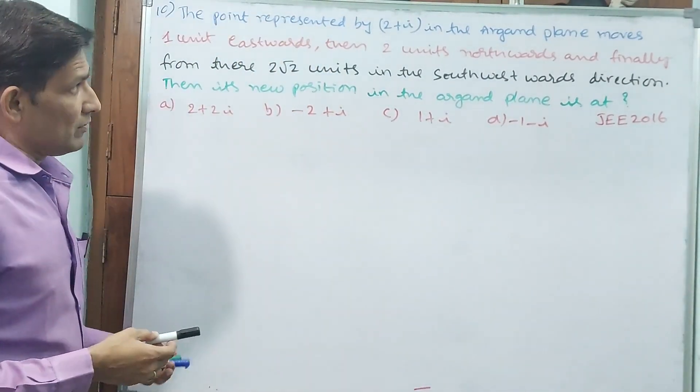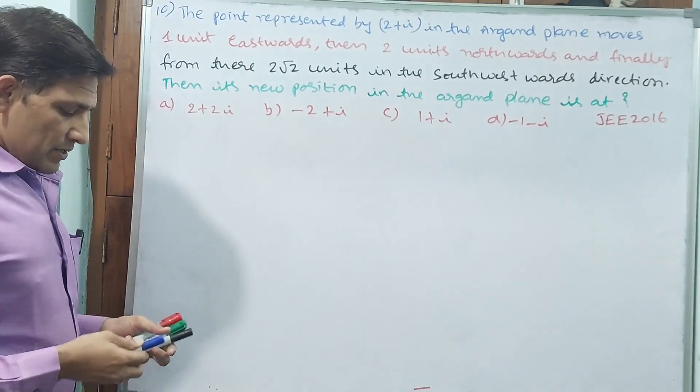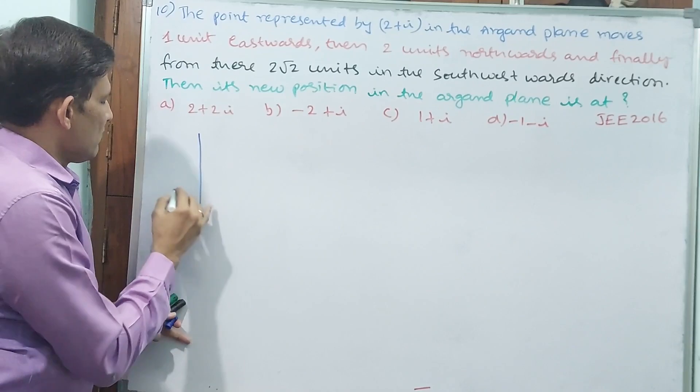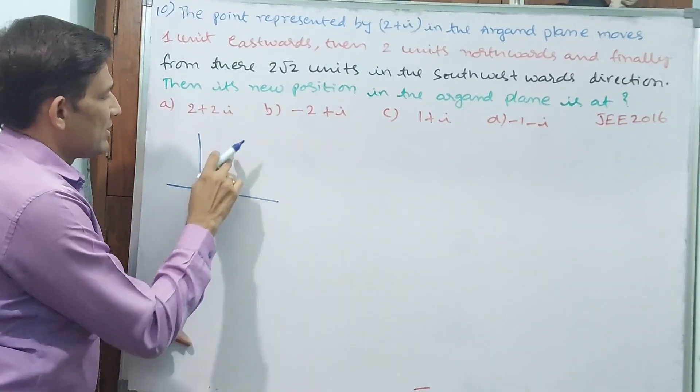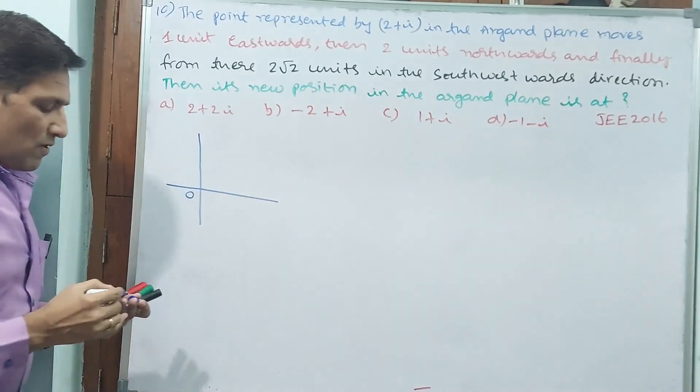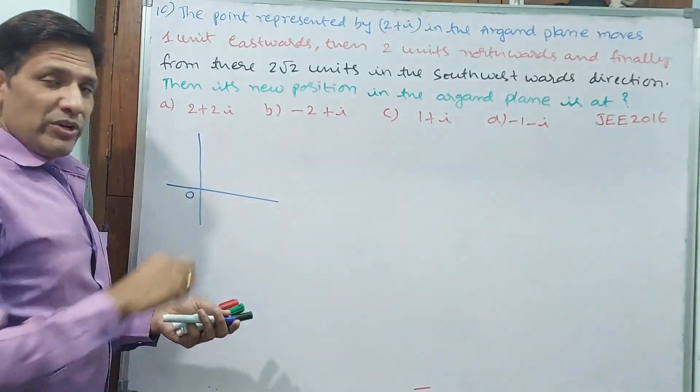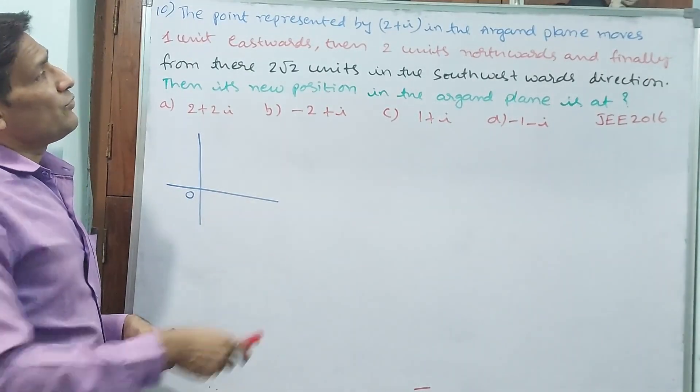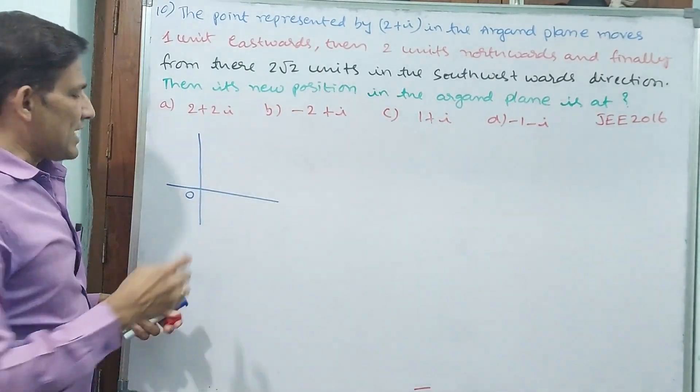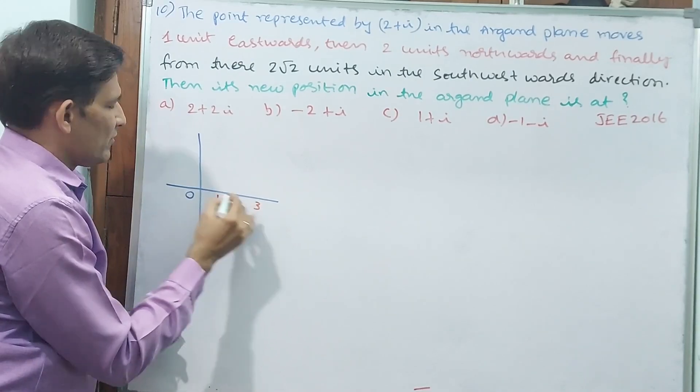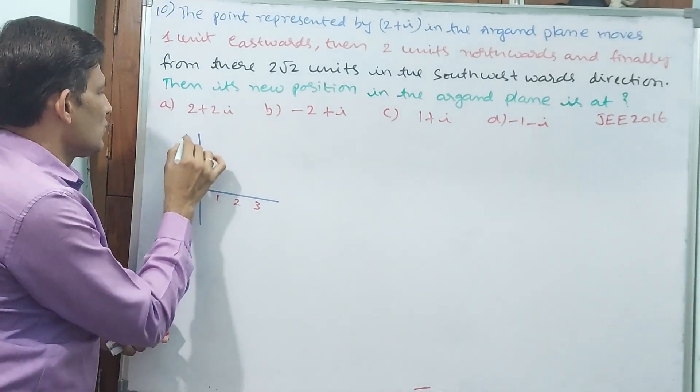It's an extreme question. Now see, I want to draw this Argand plane but not all full. I will make this first quadrant take full. This is the Argand plane. Here 1, 2, 3, and here also 1, 2, 3.